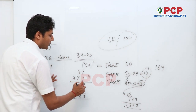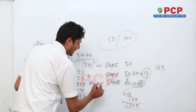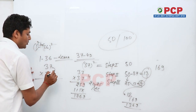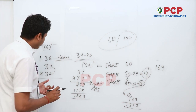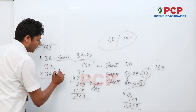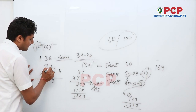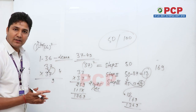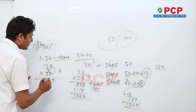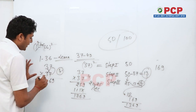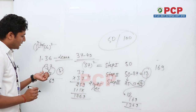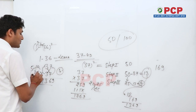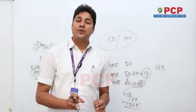Now let me show you verification using the 2×2 cross multiplication method for 37×37. Step 1: 7×7 = 49, write 9, carry 4. Step 2: cross multiply — 3×7 = 21 and 3×7 = 21; 21+21 = 42; 42+4 = 46, write 6, carry 4. Step 3: 3×3 = 9; 9+4 = 13. So the answer is 1369. I solved it in about 5 to 10 seconds.